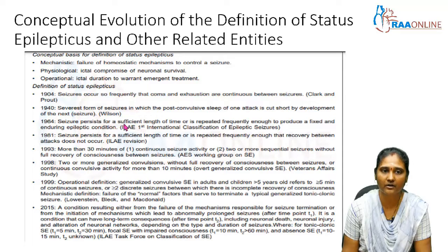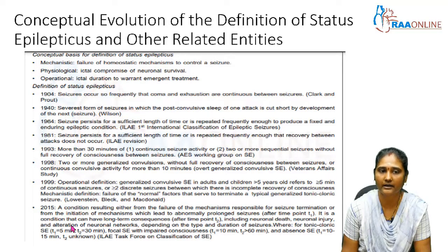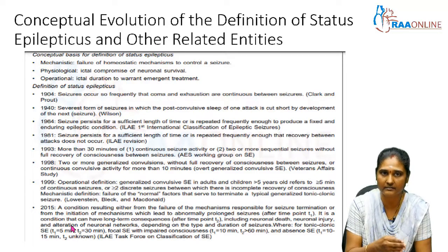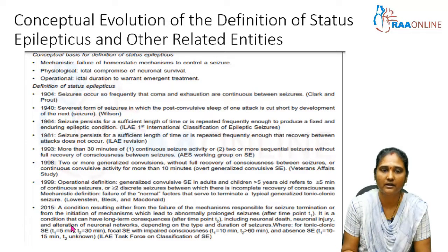The more recent definition given by the ILAE Task Force — the International League Against Epilepsy — in 2015 defines status epilepticus as a condition resulting from failure of the mechanisms responsible for seizure termination, or from initiation of mechanisms leading to prolonged seizures. T1 is the time point at which treatment should be initiated. T2 is the time at which continuous seizure activity leads to long-term consequences. The interval between T1 and T2 determines the status epilepticus and its sequelae.